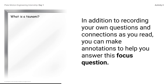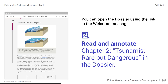In addition to recording your own questions and connections as you read, you can make annotations to help you answer this focus question: What is a Tsunami? You can open the dossier using the link in the welcome message. Read and annotate Chapter 2, Tsunamis: Rare but Dangerous. Return to Futura Workspace, open the dossier, and use the table of contents to navigate to Chapter 2. Take several minutes to actively read and annotate this section of the dossier.